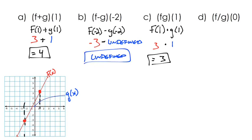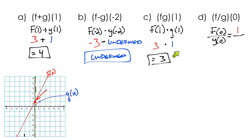Since g of negative 2 is undefined, subtracting a real number minus an undefined value means the answer is undefined — we can't do the subtraction to get a real number. For our last graph example, f of 0 over g of 0: f of 0 is along the y-axis where x is 0, giving a y-coordinate of 1. And g of 0 is the origin, the ordered pair (0, 0), so y is 0. This is again 1 over 0, which is undefined.